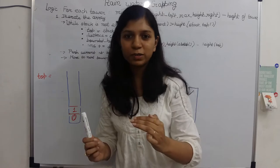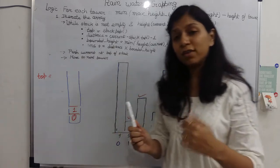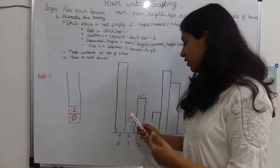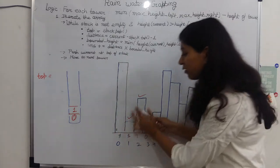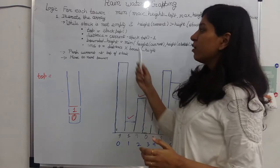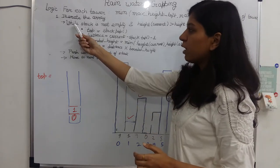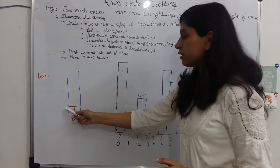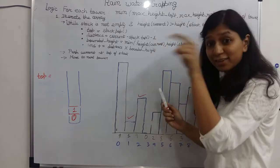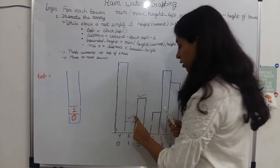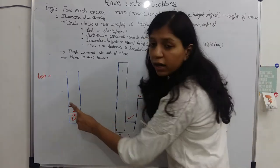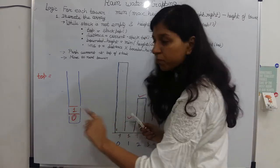If we go from a smaller to a bigger tower at a small table, then we can pop it from the small table and go to the large table. The stack is not empty and the height of the current is greater than the top item. That's clear.